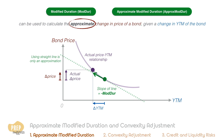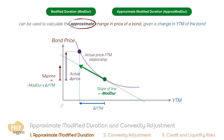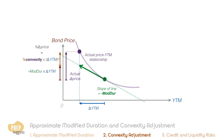The actual price should be a little higher than the price estimated using the modified duration method. This is not much of an issue if the change in yield is small. However, if the change is large, the modified duration method will severely underestimate the magnitude of change due to the convexity of the curve. To solve this, we can introduce a second term based on the bond's convexity. By taking into account both the bond's duration — the first order effects — and convexity — the second order effects — we can improve our estimate of the change in price due to a change in the bond's yield, especially for larger changes in yield to maturity.